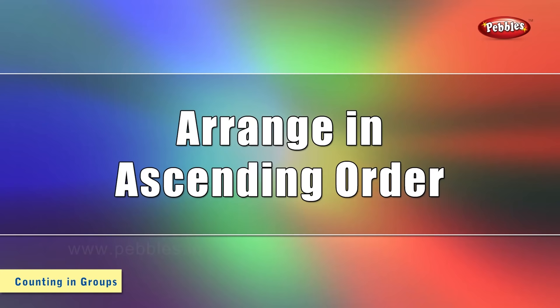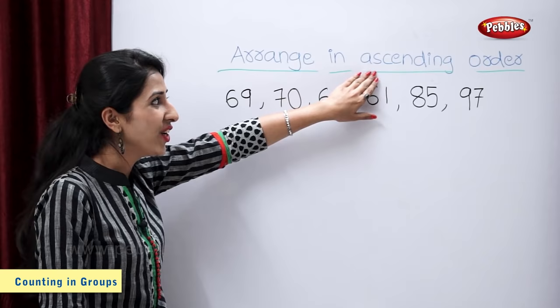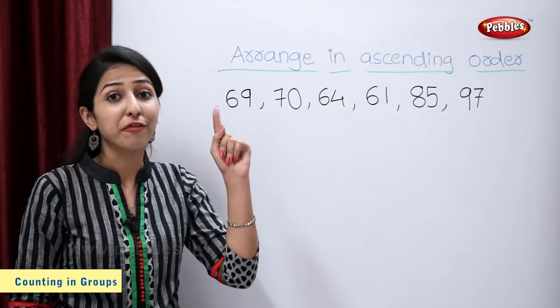Arrange in ascending order. Let us arrange these numbers in ascending order. Ascending order means the smallest number will come first.